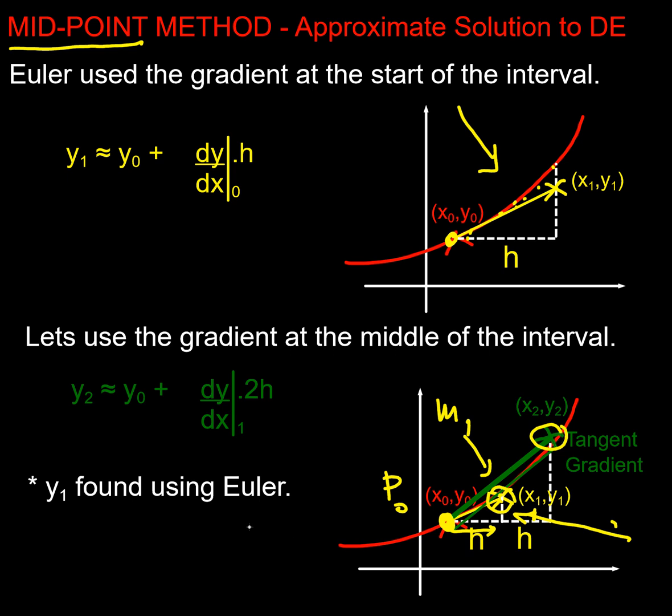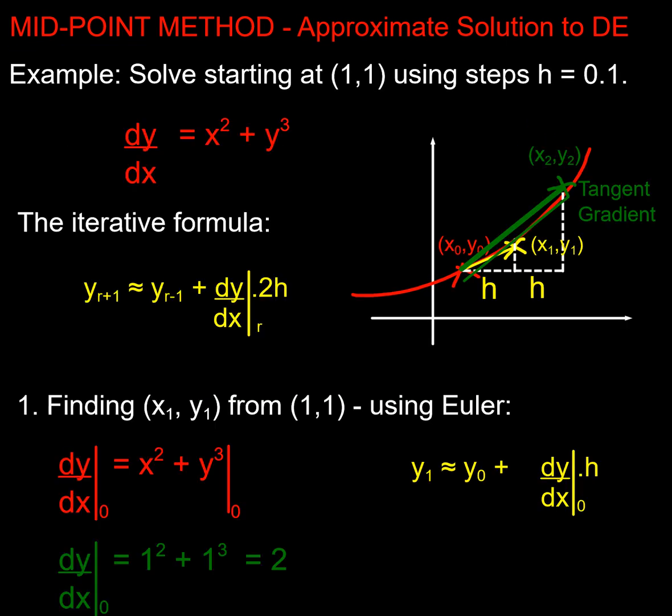Now the one thing I do need to think about is how do I get the gradient at that point? Well, I have to go back to using Euler for that first point. But if I just go through an example it will become clear how the process works. This is just an intuitive method. So here's my differential equation and it does rely on the fact that I can get dy/dx on its own on this side and I can put everything else on the other side.